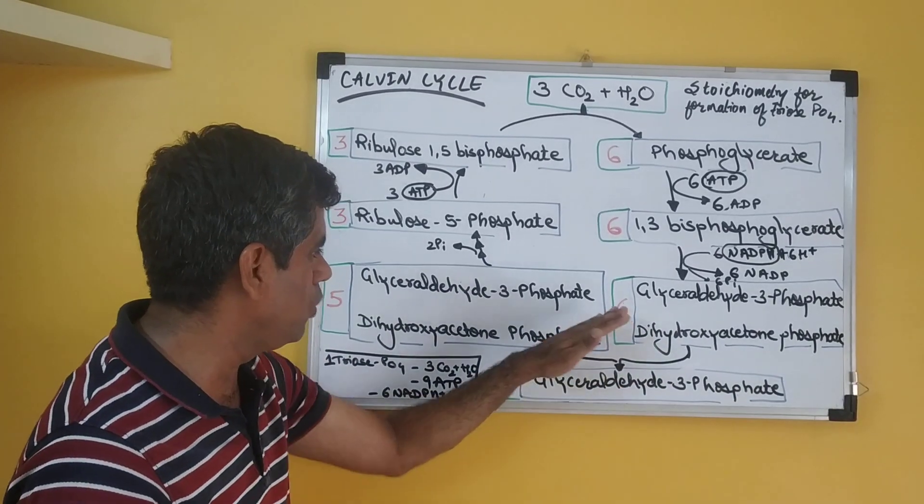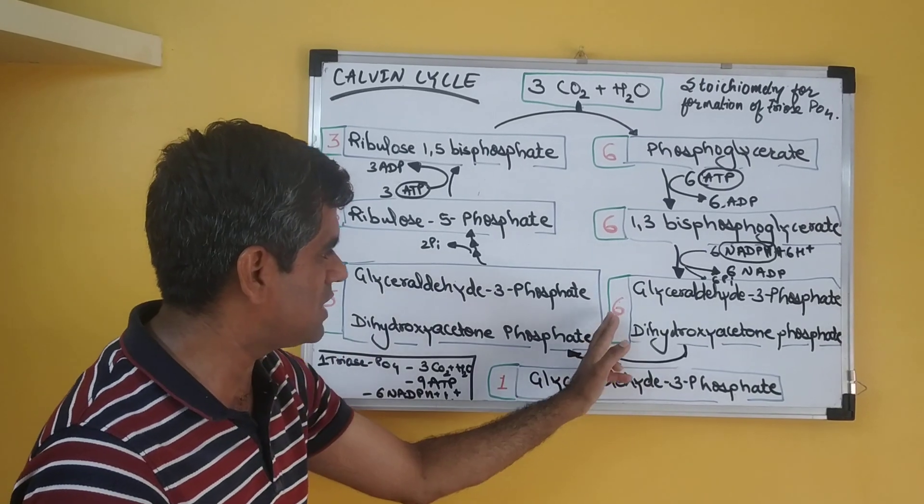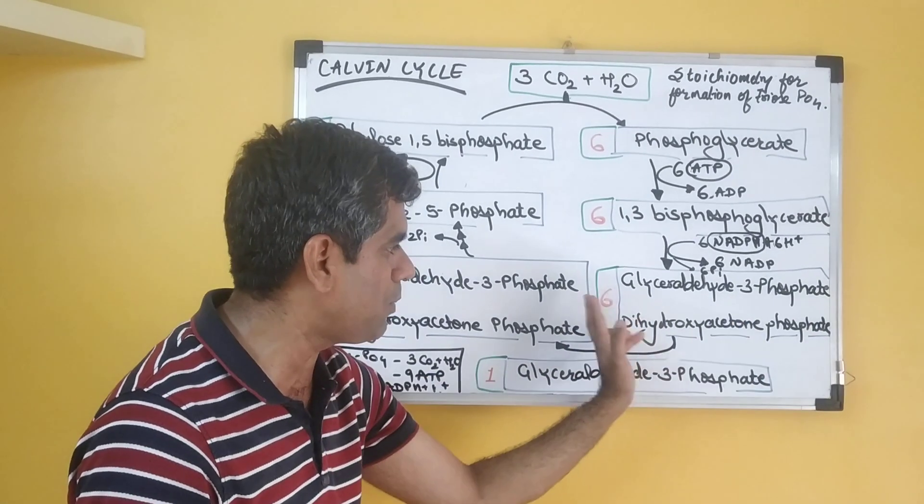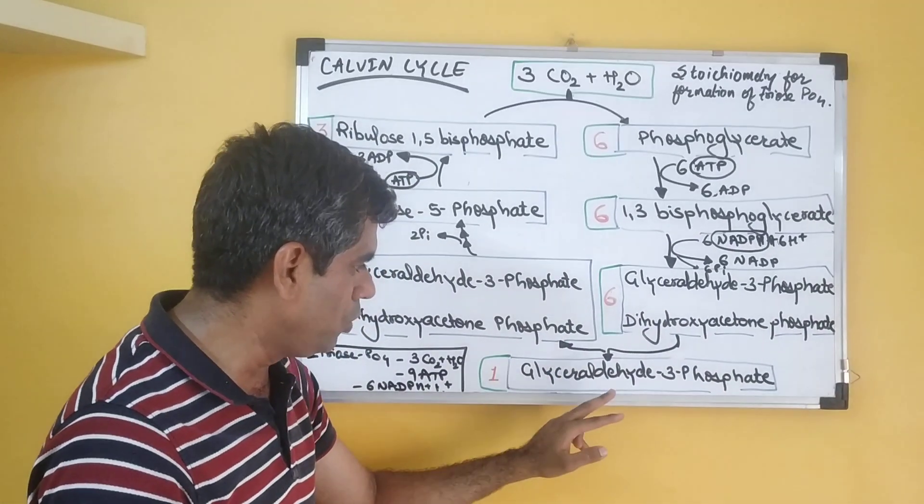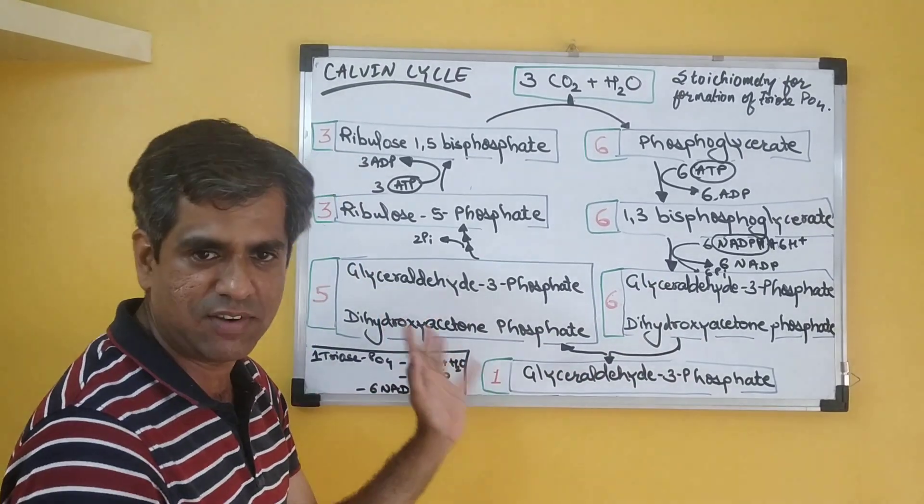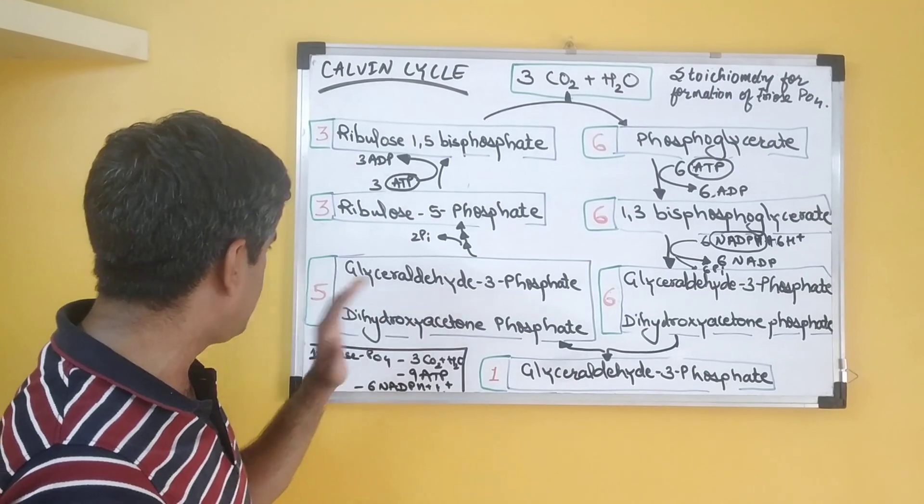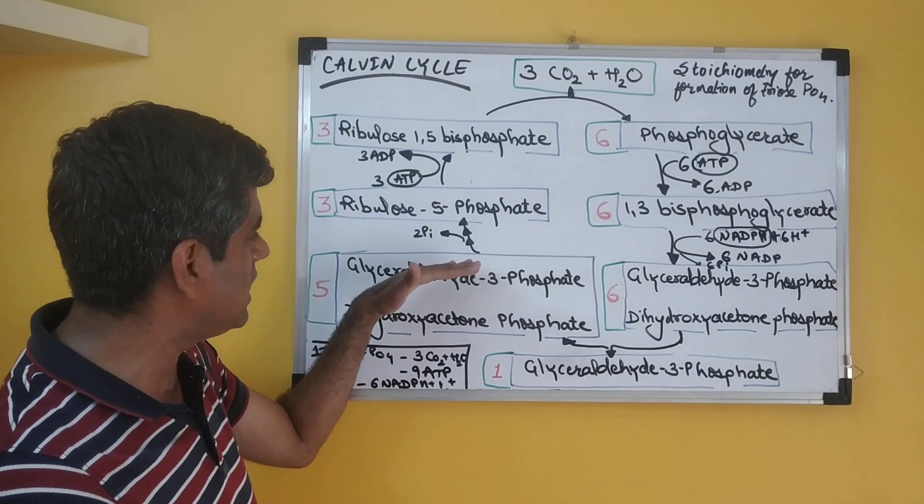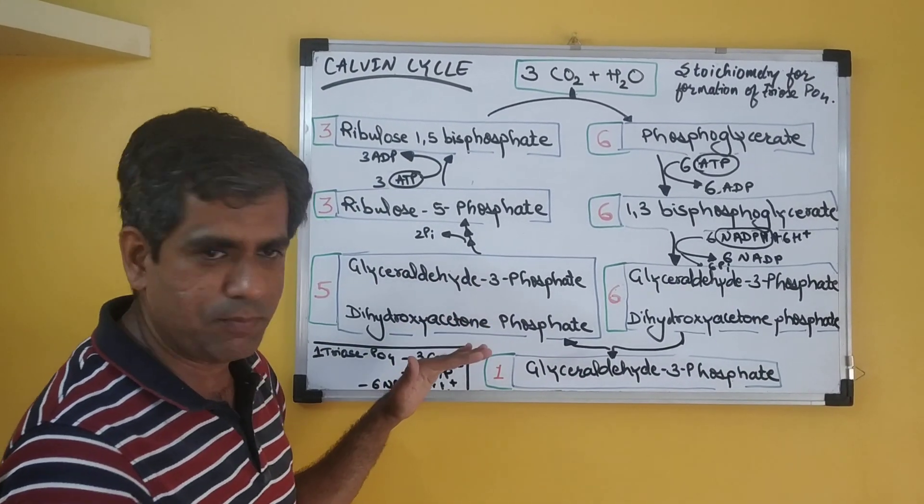From this, once we remove one molecule, we have five molecules. So you have six times three, that is 18 carbon atoms. One molecule you have removed, this is again a 3-carbon atom molecule. So 18 minus 3, we have again 15 carbons arranged in the form of five molecules of glyceraldehyde-3-phosphate or DHAP.